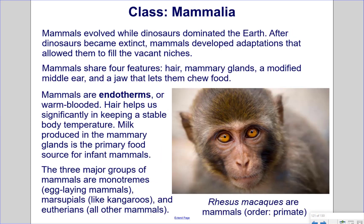Class Mammalia. Mammals evolved while dinosaurs dominated the earth. After dinosaurs became extinct, mammals developed adaptations to fill the vacant niches. Mammals share four features: hair, mammary glands, a modified middle ear, and a jaw that lets them chew food. Mammals are endotherms — warm-blooded. Hair helps maintain a stable body temperature even in very cold conditions. Milk from mammary glands is the primary food source for infant mammals. The three major groups are monotremes (egg-laying mammals), marsupials like kangaroos, and eutherians (all other mammals). Pictured here is the rhesus macaque, a mammal in the order Primates.